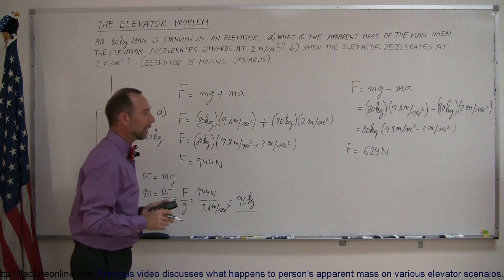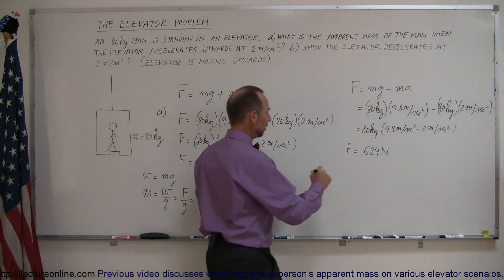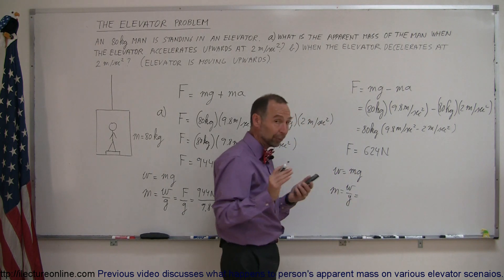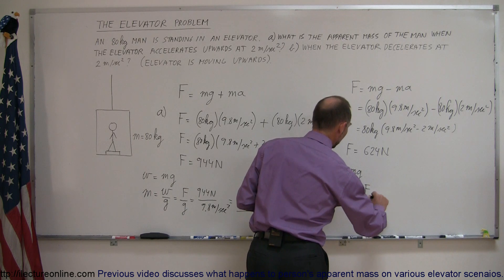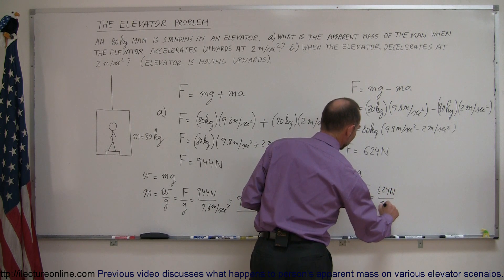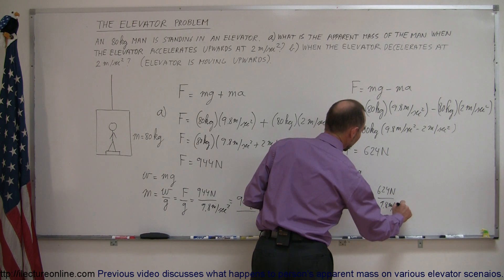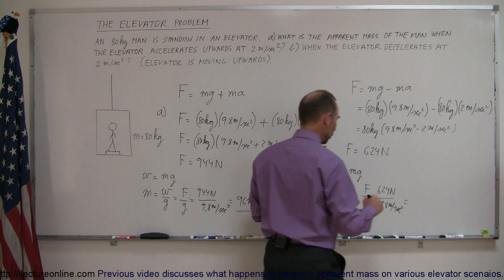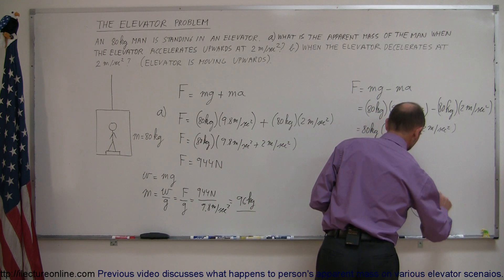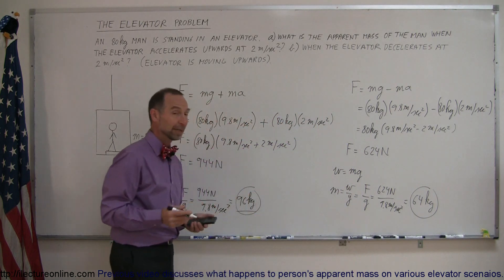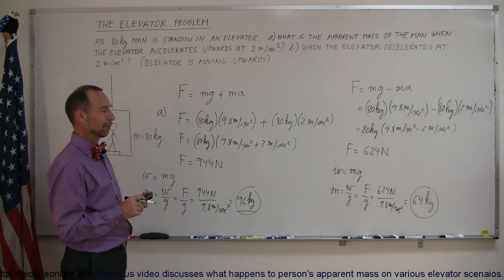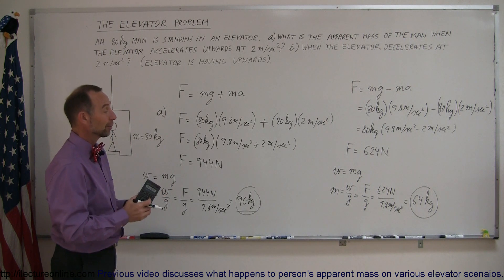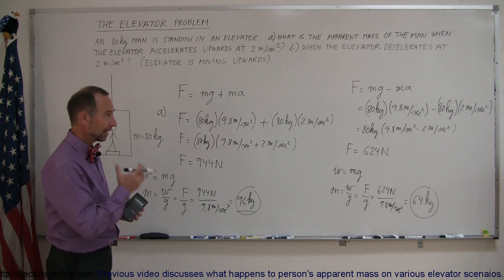To find the apparent mass, since weight equals mg, mass equals force divided by g — in this case 624 newtons divided by 9.8 meters per second squared — and that gives an apparent mass of 64 kilograms. So 96 kilograms when the elevator is speeding upward, and 64 kilograms when the elevator is slowing down. You can see how it can be quite a sensation in an elevator, especially when accelerations are large — your apparent weight changes quite a bit, and that's how to solve a problem like this.